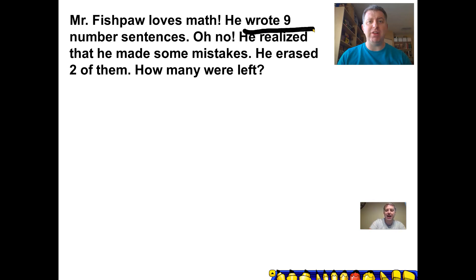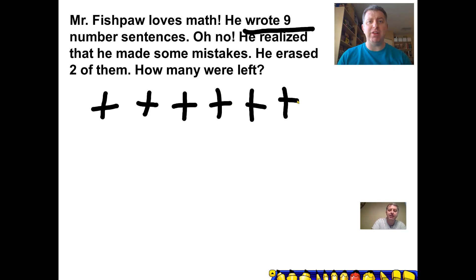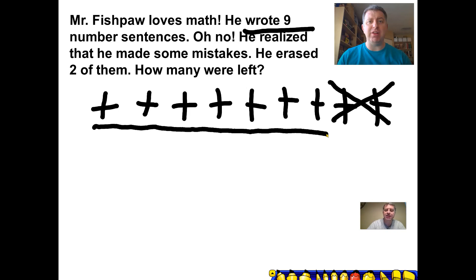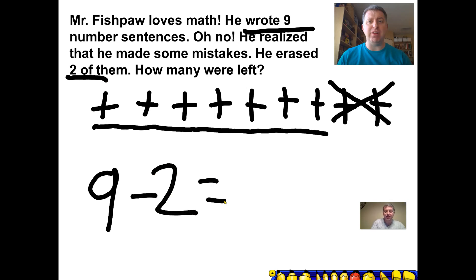All right, let's check your work. He wrote nine number sentences — I'm going to use plus signs for the nine sentences he wrote: one, two, three, four, five, six, seven, eight, nine. And he had to erase two of them because he made mistakes. Let's see how many are left: one, two, three, four, five, six, seven. Seven were left. Since the number got smaller and we took some away, we're going to write a subtraction sentence. He started with nine number sentences, had to erase two of them, and that left seven. Nine take away two equals seven. Did you get that? Great job, friends.